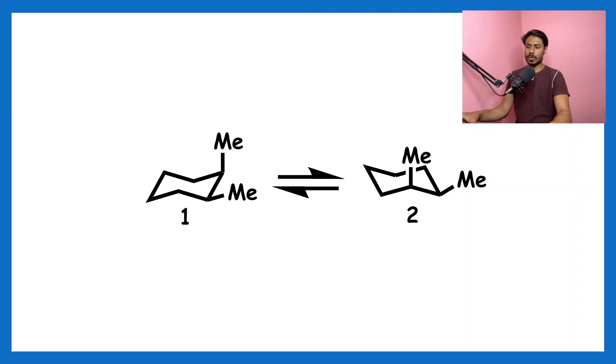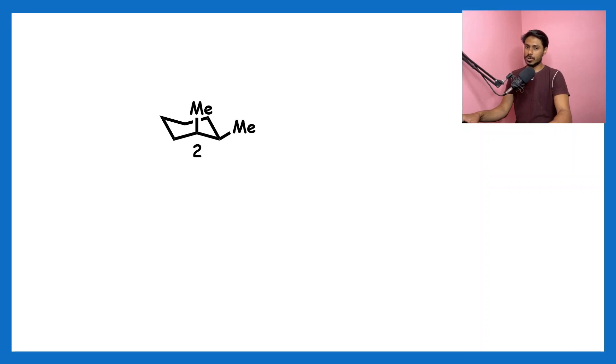...designate them as molecule one and molecule two. Upon flipping molecule one, we get molecule two. The structure of molecule two is very important. If we closely look at it, this is actually the same as this molecule. How? If you rotate molecule two by 120 degrees along the...